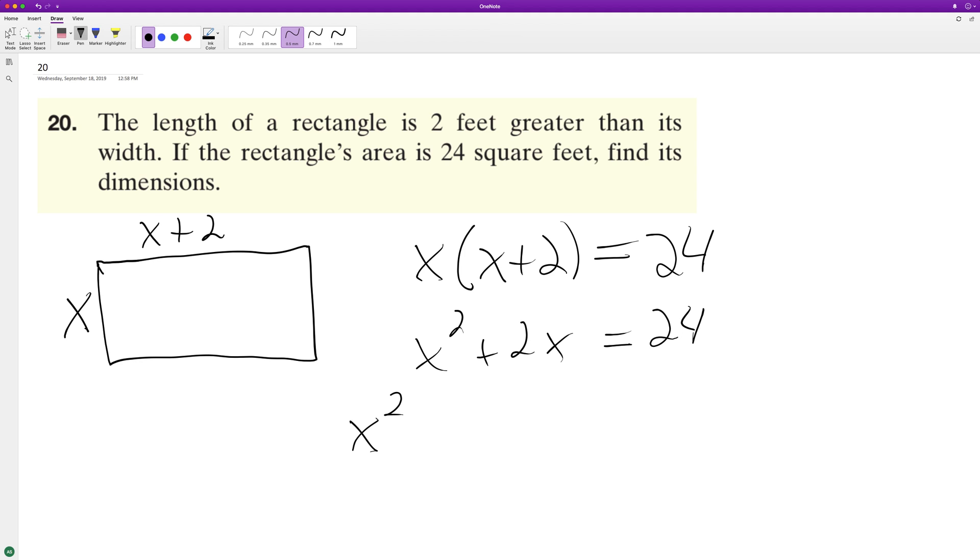We can do x squared plus 2x minus 24 equals 0 and we can break this down into factored form.